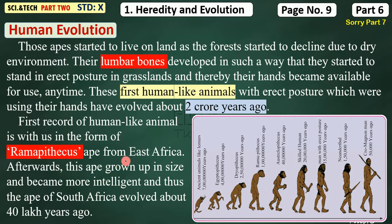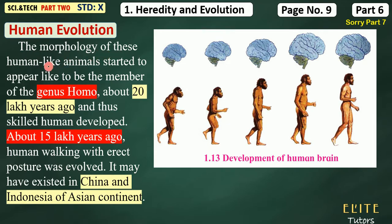This is an intelligent type of ape that was in South Africa 40 lakh years ago. This whole story centers on Africa. The morphology of these human-like animals — including the cranial capacity and brain size — was changing and growing. They started to appear like members of the genus Homo. Homo is a Latin word meaning 'man'.